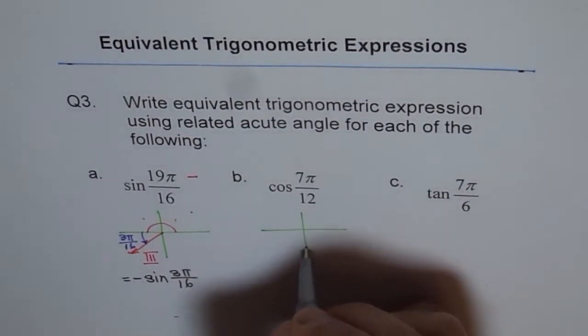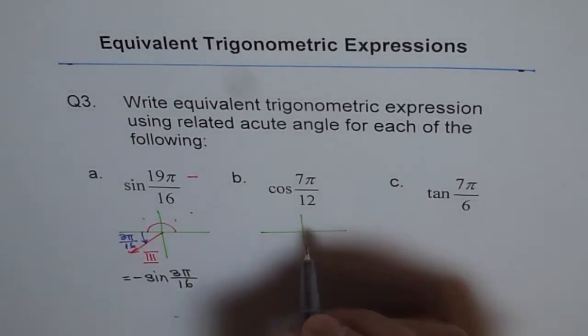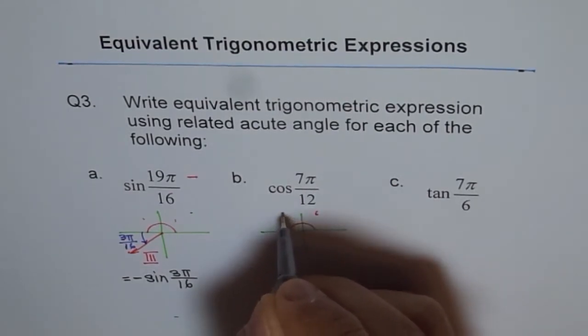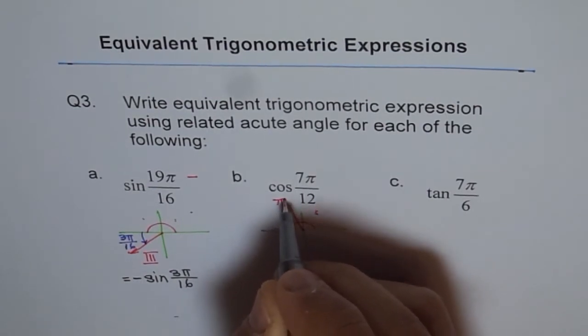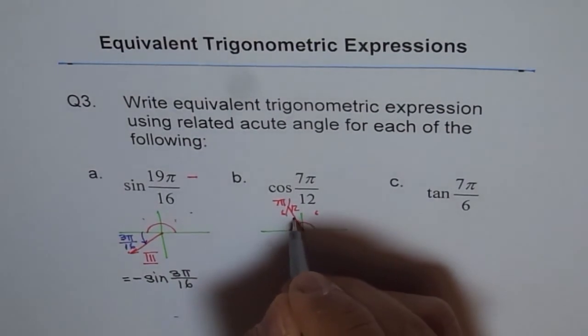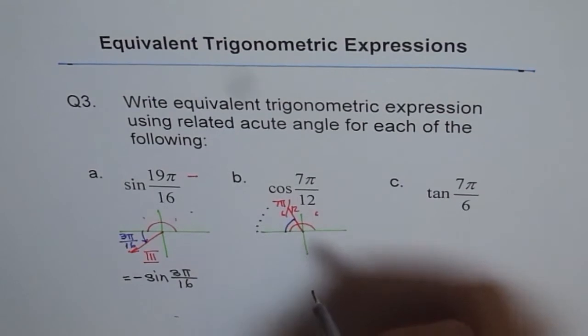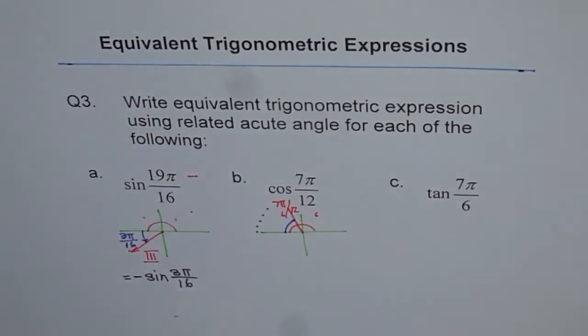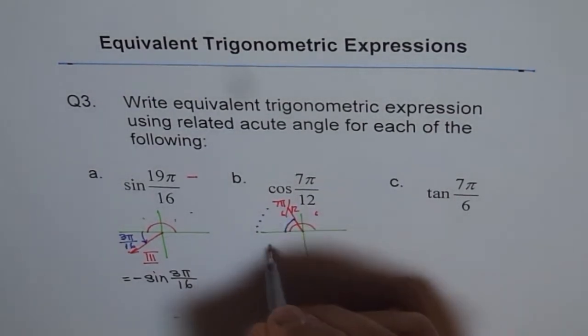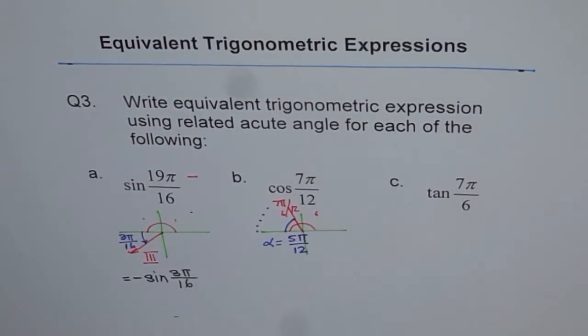Let's do this one. When we say cos of 7π by 12, follow the same process. 7π by 12, that means this is divided into 12 parts. 6 here and 6 here. 7th will be right there. Do you see? This is your 7π by 12. So what is your acute angle? So 8, 9, 10, 11, 12. Do you see? 5 more to go. Do you understand? So the related acute angle alpha is 5π by 12.